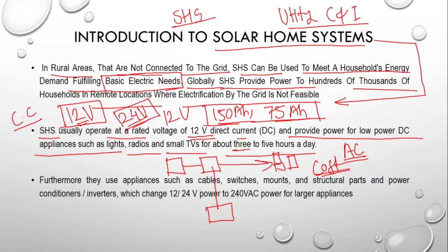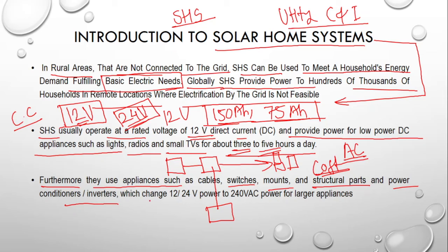As per storage requirements, we can store power for 3 to 5 hours with a battery capacity of 60, 75, or 150 ampere-hours. The system also includes components such as cables, switches, mounts, and structural parts. The power conditioner — also called the inverter — handles DC-to-AC conversion, changing the 12-volt or 24-volt system into 240-volt AC for powering larger appliances.